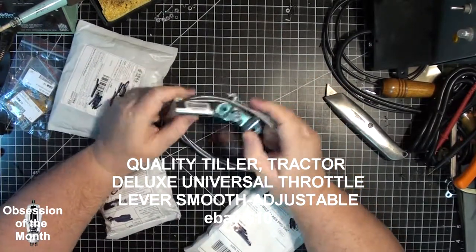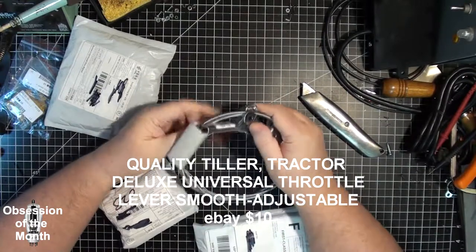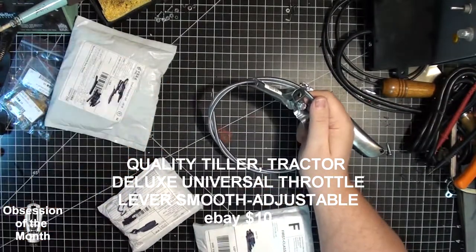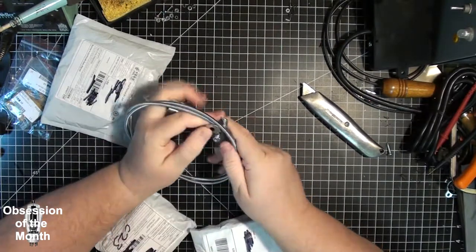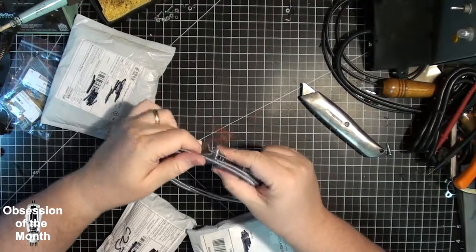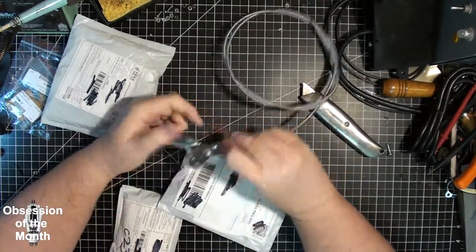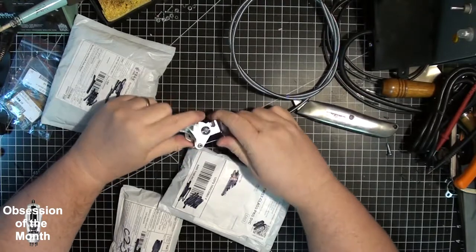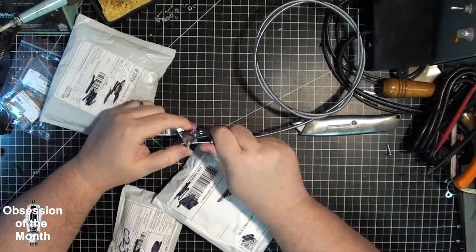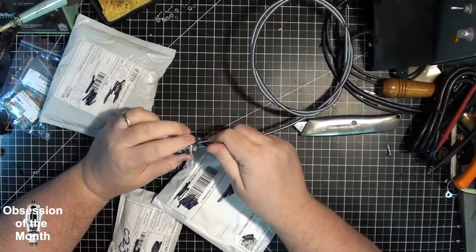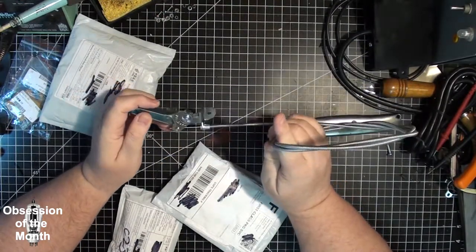This is a throttle cable so I can finally finish my small DC generator. I wanted something that you could control the throttle and it would stay. This one has a configurable tension - you can tighten this to control how much tension is on the throttle.